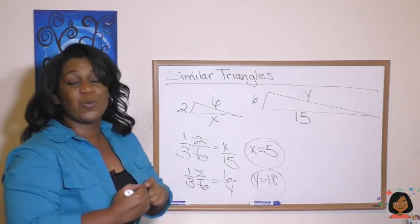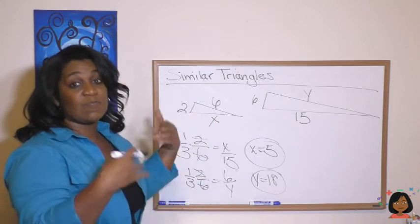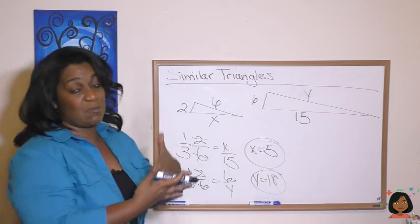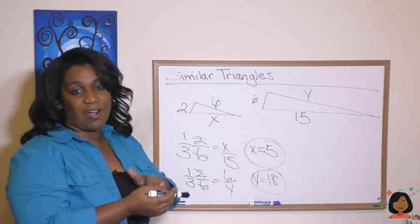Okay. So again, all we're doing is using what we've learned about proportions and applying it to these similar triangles. Again, similar triangles have corresponding sides that are proportional.